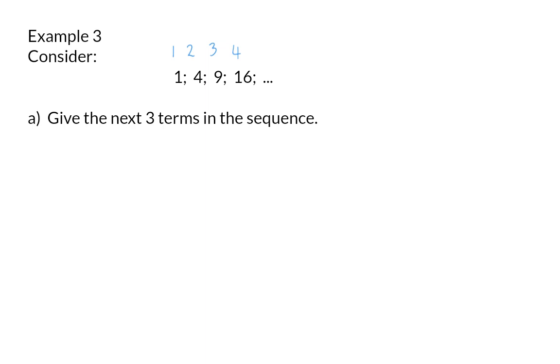If you focus on the position of each term you will realize that the value of the term is given by the position squared. 1 squared is 1, 2 squared gives us 4, 3 squared is 9 and so it continues. Therefore to get term 5 we will say 5 squared. For term 6 it's 6 times 6 and for term 7 we have 7 squared.